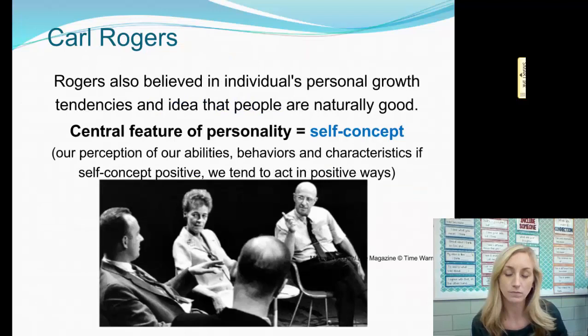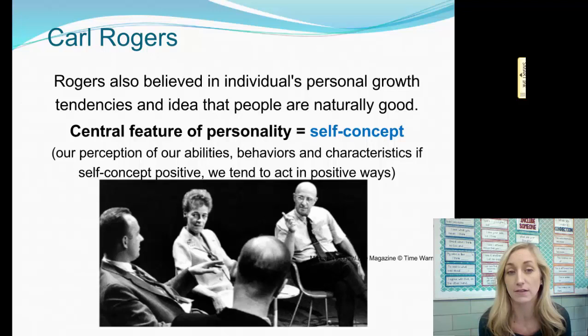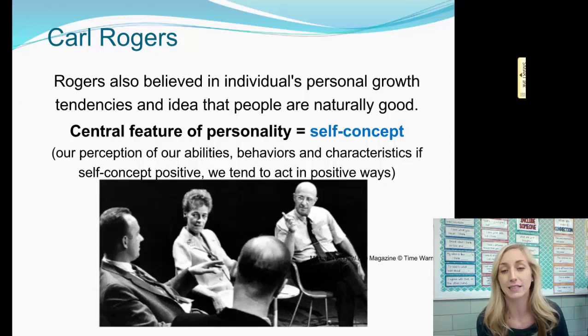Carl Rogers is the other key name. Rogers also believed in individuals' personal growth tendencies and the idea that people are naturally good. The central feature of personality, according to Carl Rogers, is self-concept — our perception of our abilities, behaviors, and characteristics. If we have a positive self-concept, we tend to act in positive ways. So if we perceive our abilities as 'I am able to do this,' then we have a positive self-concept.